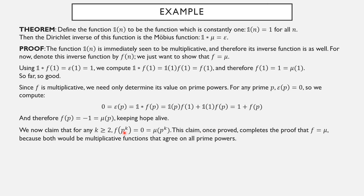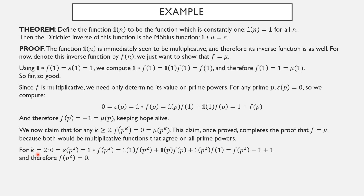For k at least 2, we claim f of p to the k equals mu of p to the k, which is 0. Base case k equals 2: epsilon of p squared must be 0. The positive factors of p squared are 1, p, and p squared. The 1 function is always 1, so we get f of p squared plus f of p plus 1. Since f of p is negative 1 and f of 1 is 1, these cancel and f of p squared must be 0. That matches our claim, establishing the base case.